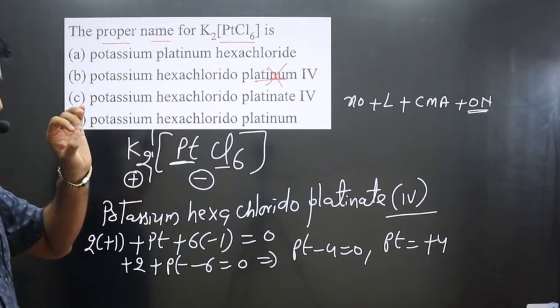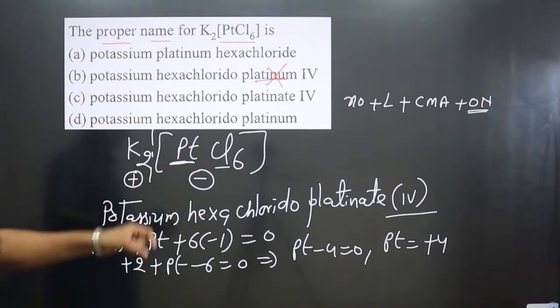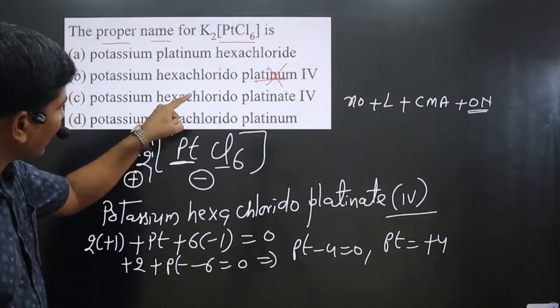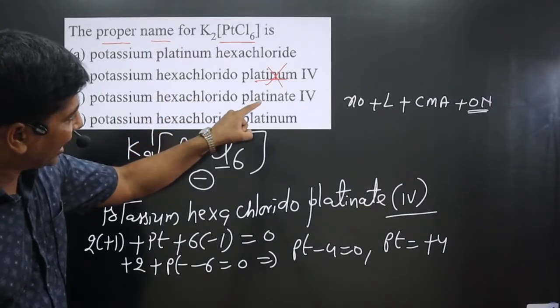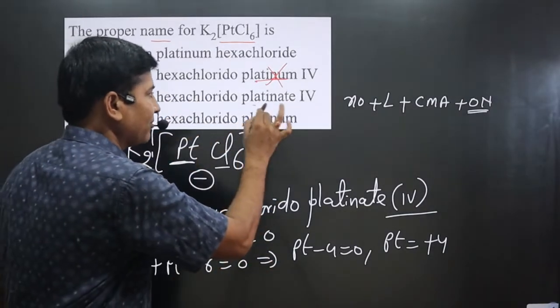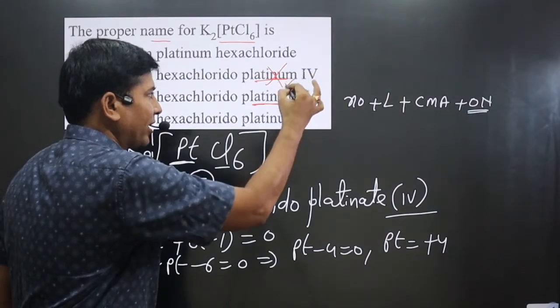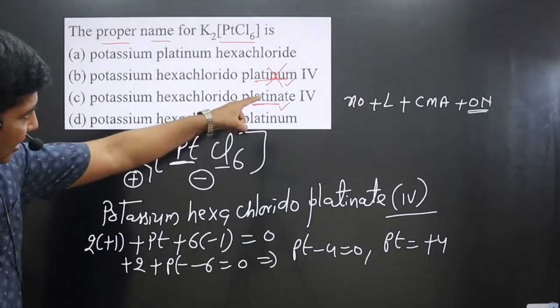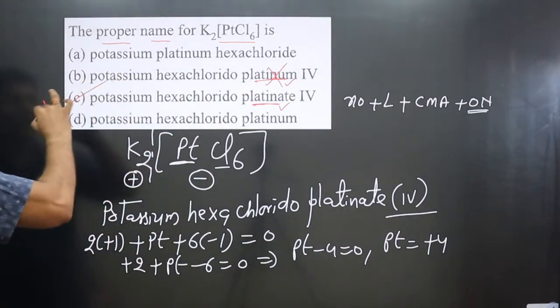You can see these two options are almost matching. You can see potassium hexachlorido and platinate(IV). The only difference here is because one is talking about cationic, the other is talking about anionic complex. And this platinum is present in anionic complex. Option C is correct.